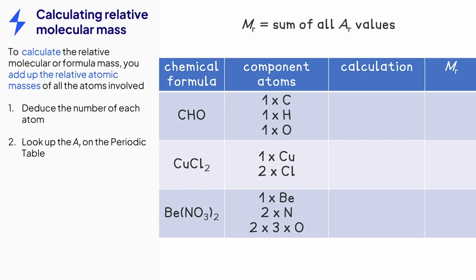We then look up the relative atomic masses on the periodic table and apply them. So CHO is 12 plus 1 plus 16. CuCl2 is 63.5 plus 2 times 35.5.